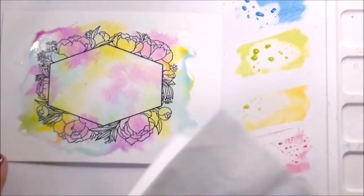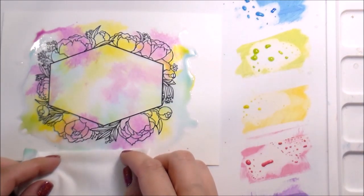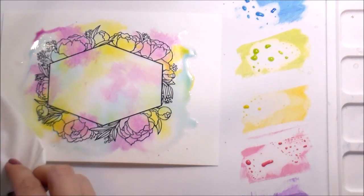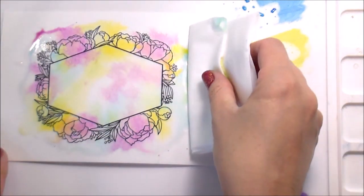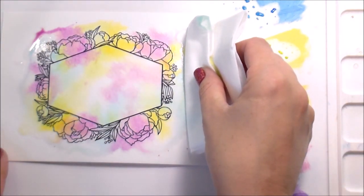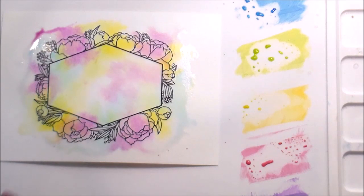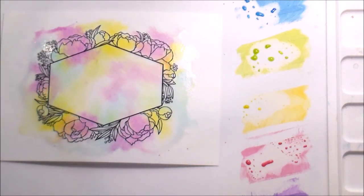So I am going to go in with a paper towel and blot up some of the extra water on the edges where the color is pooling just because I wanted my edges to be a little bit softer. You certainly could leave this here and let it dry. I just didn't want necessarily harsh color on the outside edges.